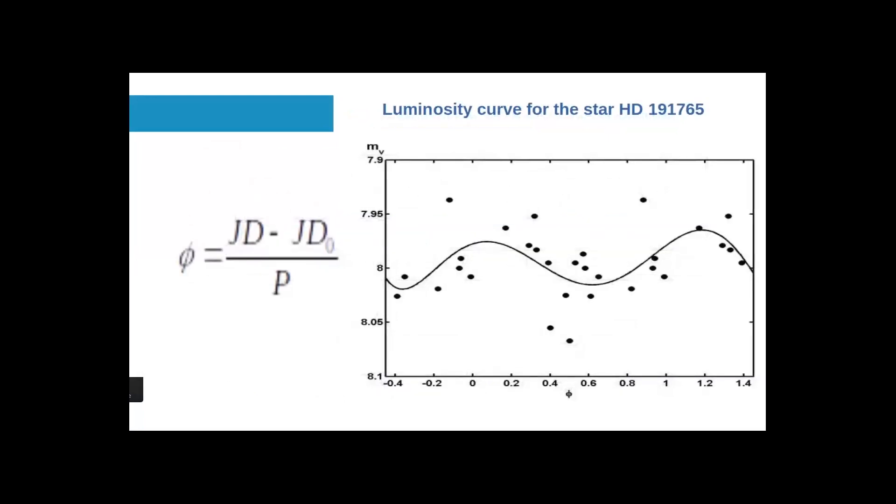One of the main curves for any star showing periodic variability is a luminosity curve, the dependence of stellar magnitude from phase of period. After finding the period, we can compute the phase using this equation. Here phi is phase, P is period, JD stands for Julian date when we obtained the image, and JD0 is the beginning Julian date. Using this equation we find phase and construct the luminosity curve for this star.